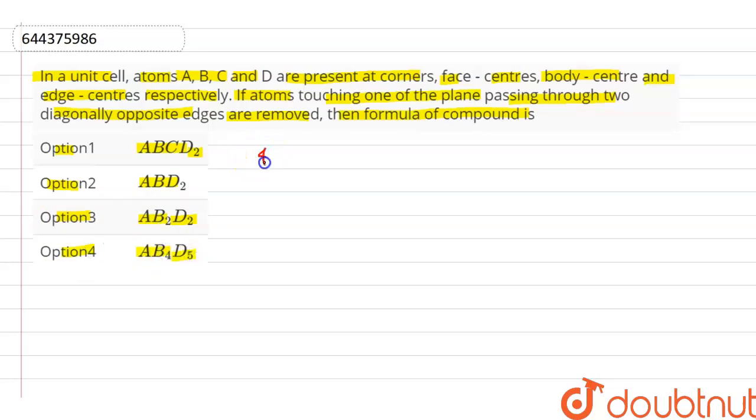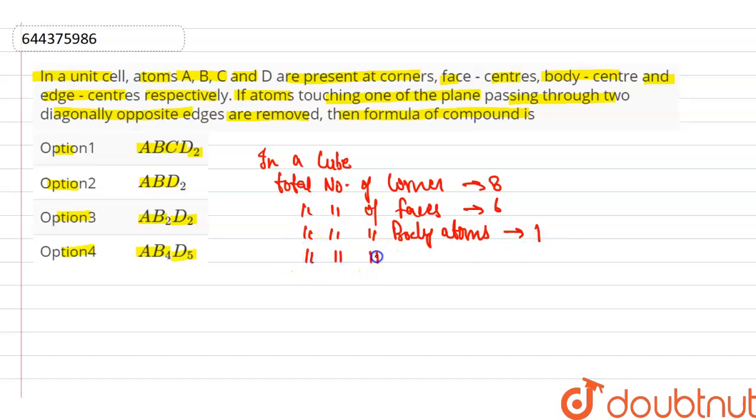Now, firstly we know in a cube, total number of corners is 8, total number of faces is 6, and total number of body atoms is 1, and total number of edges is 12.